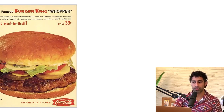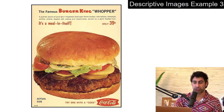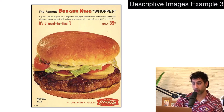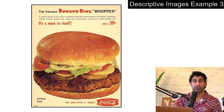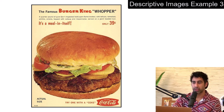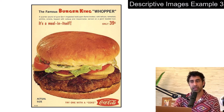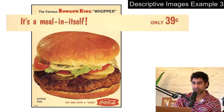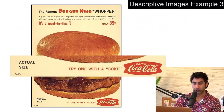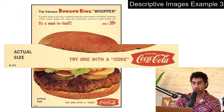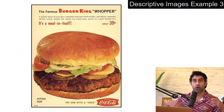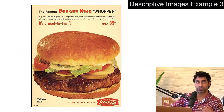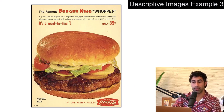Let's go for another image. Look at this one — a descriptive image. Now we're selling a burger. This is an old Burger King Whopper ad. All they need to do is show a big, juicy burger. This ad transmits a lot of information: what the burger looks like, it makes me hungry, it says it's a meal in itself, only 39 cents, actual size, try one with a Coke. It has all the stuff that conveys to me that I should buy this burger, all in one image.